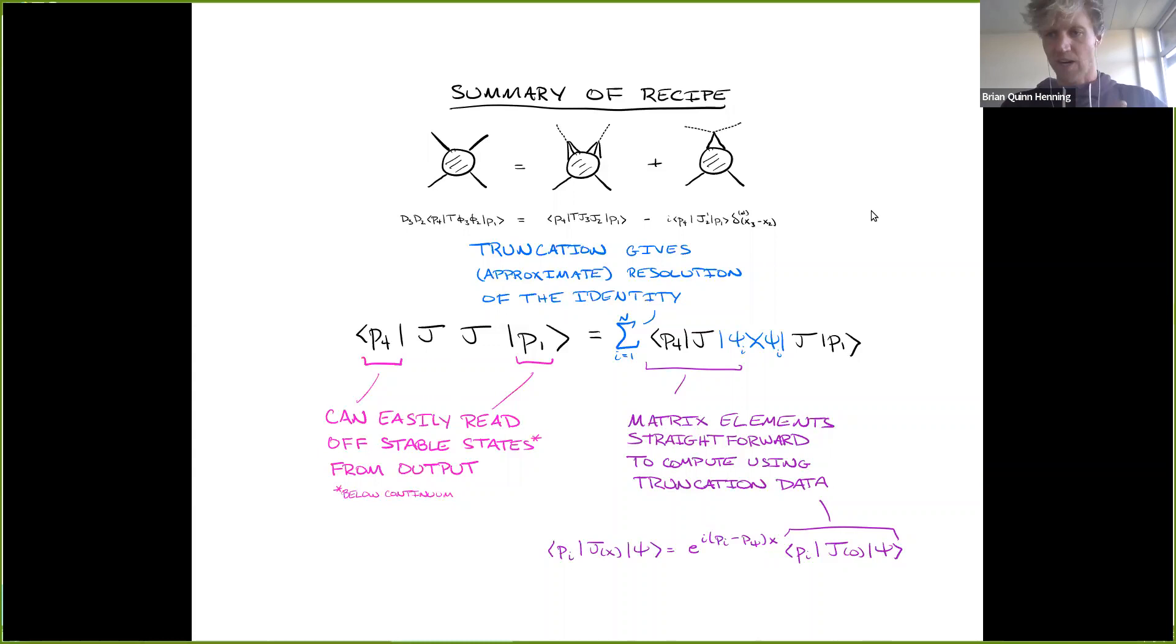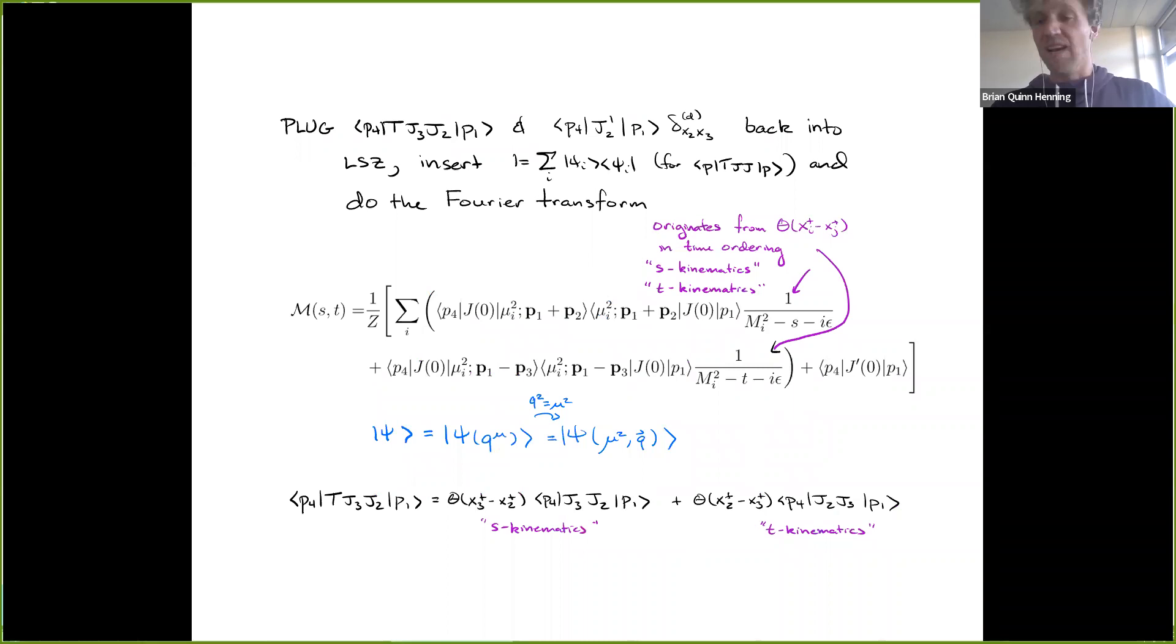Summary. Truncation provides you approximate resolution identity. LSZ allows you to relate amplitudes to correlation functions into which we can insert said the resolution of the identity. We don't strip off all the particles. We leave some in because we can easily read those off out of the truncation data. And we can compute these matrix elements with truncation data.